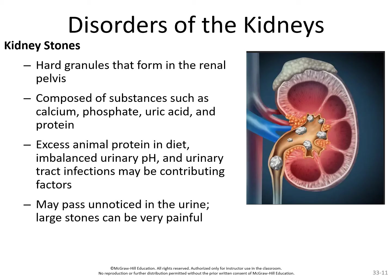Kidney stones are granules that form in the renal pelvis, made up of calcium, phosphate, uric acid, and protein. Causes include repeated urinary tract infections, abnormal urinary pH, and excess animal protein in the diet — which produces more nitrogenous wastes and uric acid buildup. Small stones can pass completely unnoticed, but large stones can be incredibly painful. Looking at the largest stone in the diagram, you can see it swelling out the ureter and causing a physical blockage. A physical blockage at the kidney can literally kill the kidney in 24 to 48 hours.